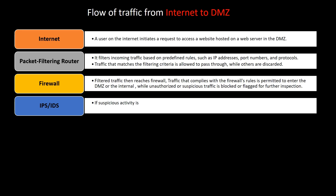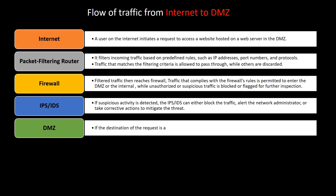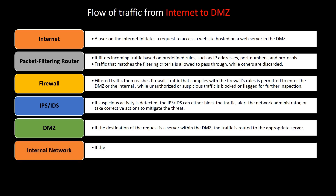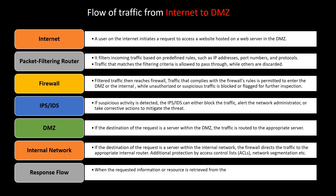If suspicious activity is detected, the IPS or IDS can either block the traffic, alert the network administrator, or take corrective actions to mitigate the threat. If the destination of the request is a server within the DMZ, the traffic is routed to the appropriate server. If the destination is a server within the internal network, the firewall directs the traffic to the appropriate internal router, with additional protection provided by access control lists and network segmentation. When the requested information or resources are retrieved from the DMZ server, the response packet follows the same path back to the user on the internet.